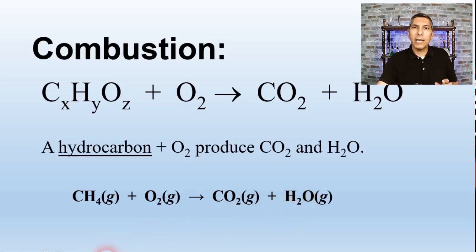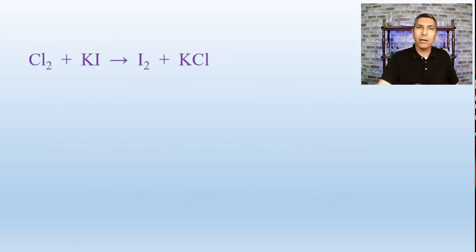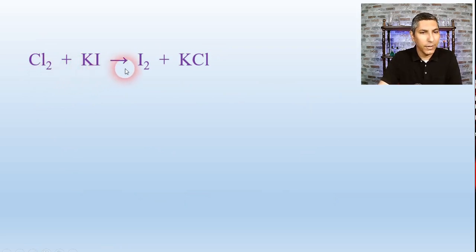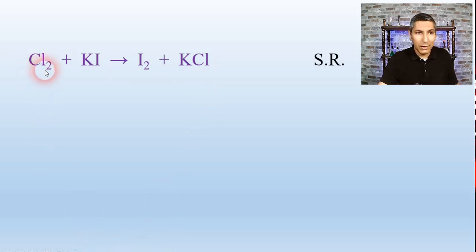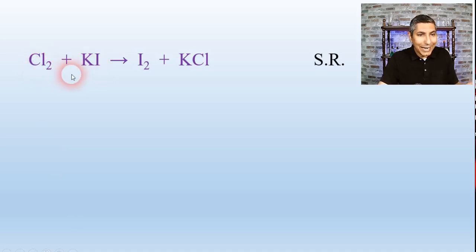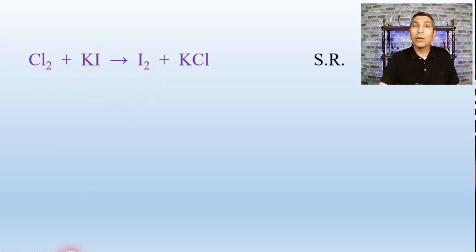Let's take a look at a couple of examples and see if we can classify some simple chemical equations. We have Cl2 plus KI yields I2 plus KCl. Can you tell which of the five types this is? Hopefully you said single replacement — because we have an element, chlorine, being added to a compound, potassium iodide. The chlorine kicks out the iodine: K gets with Cl, and iodine is the other product.